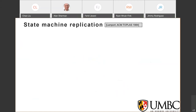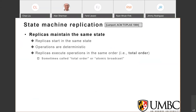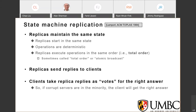This page shows the concept of state machine replication. The basic idea is that correct replicas maintain consistent state. You start the correct replicas in the same state, make sure operations are computed deterministically, and the replicas execute operations in the same order so they can proceed in lockstep. This is also called total order or atomic broadcast. Then the replicas send their responses to the client, and the client gets the right answer from the majority of the correct replicas.